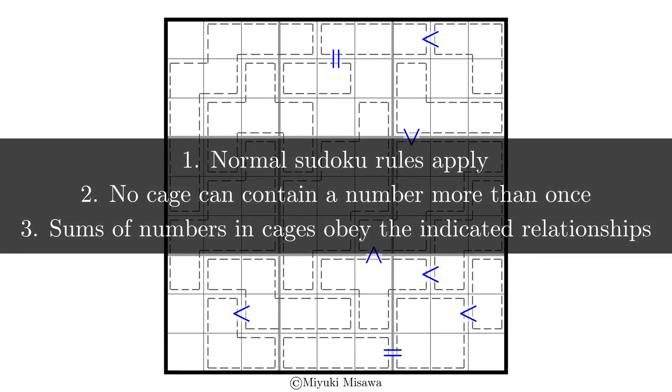Let's see the exact rules. Rule 1, normal sudoku rules apply. Rule 2, no cage can contain a number more than once. And Rule 3, sums of numbers in cages obey the indicated relationships.